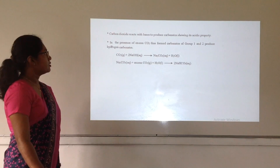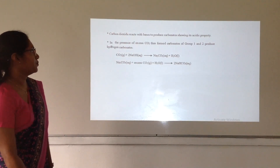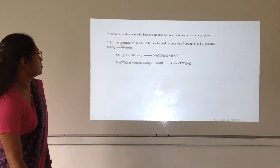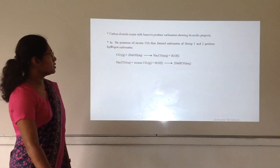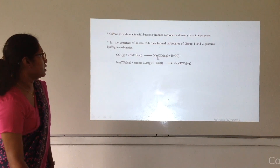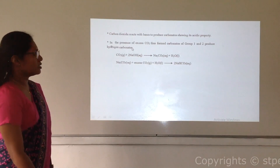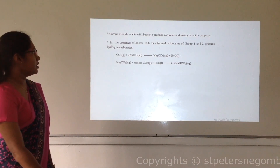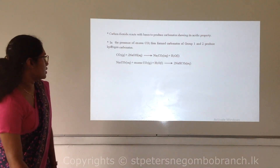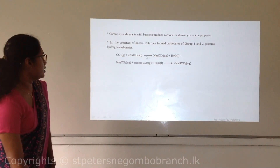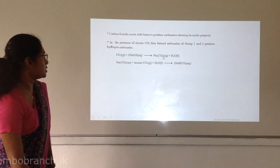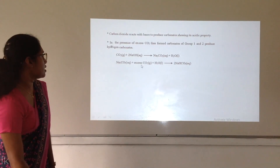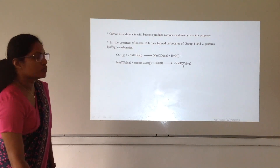When carbon dioxide reacts with bases it produces the relevant carbonate. In the presence of excess carbon dioxide, Group 1 and Group 2 carbonates produce hydrogen carbonates. For example, carbon dioxide reacts with sodium hydroxide to produce sodium carbonate, and then if excess carbon dioxide is present, it reacts with sodium carbonate to produce sodium bicarbonate.